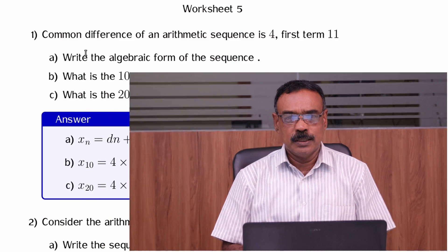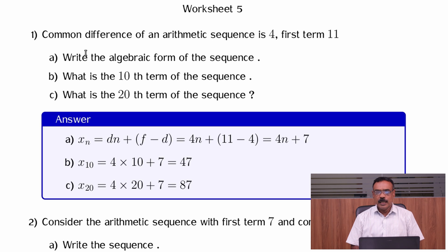Arithmetic sequence — 1st worksheet: Algebraic Form of an Arithmetic Sequence. We will discuss the 1st worksheet. If f is the 1st term and d is the common difference, its nth term xn is equal to dn plus f minus d.